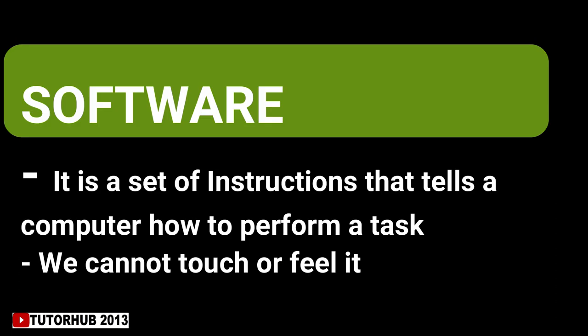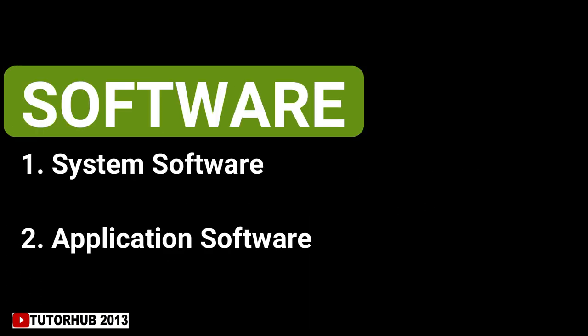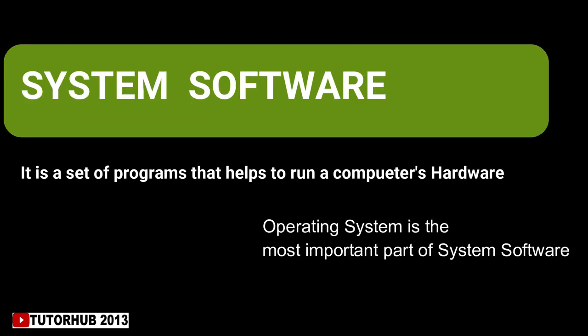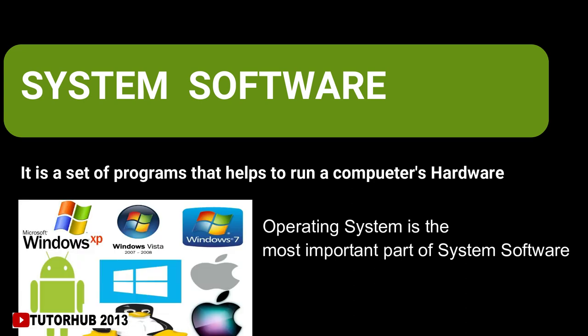Software is a set of instructions that tells a computer how to perform a task. We cannot touch or feel software, unlike hardware. There are two types of software: system software and application software. System software refers to a set of programs that helps run a computer's hardware. The operating system is the most important part of system software — it is the master control program that runs the computer and acts as a link between computer hardware and the user.